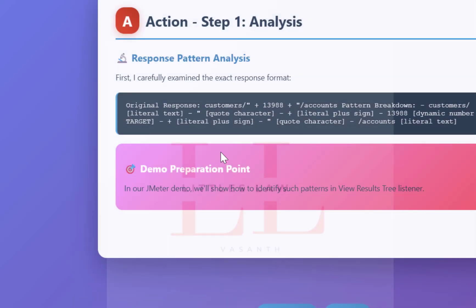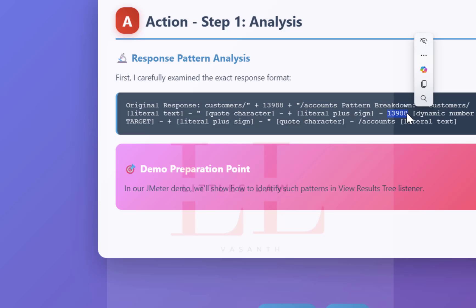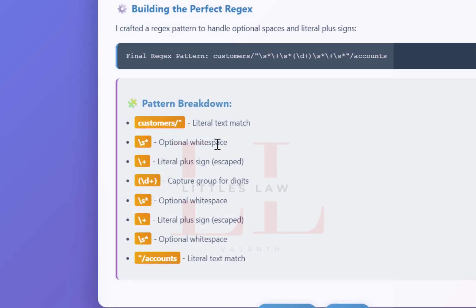You need to correlate the dynamic value — the five-digit number — so that JMeter can automatically capture it from the previous response and reuse it in subsequent requests. Based on that, your account number will also change. The pattern challenge is: you have customers then forward-slash, then literal plus signs — they are not string concatenation — and you have spaces before and after the literal plus signs. You have to extract just the numeric value. Your first step is to analyze the pattern carefully.